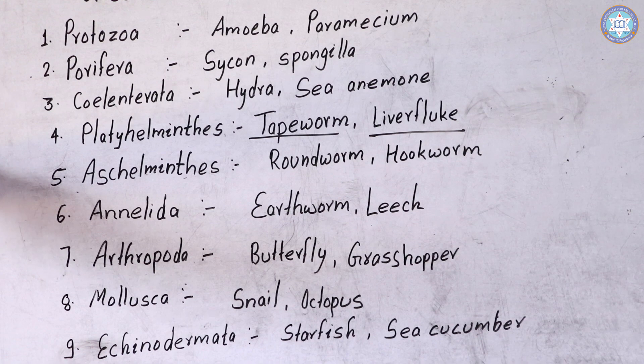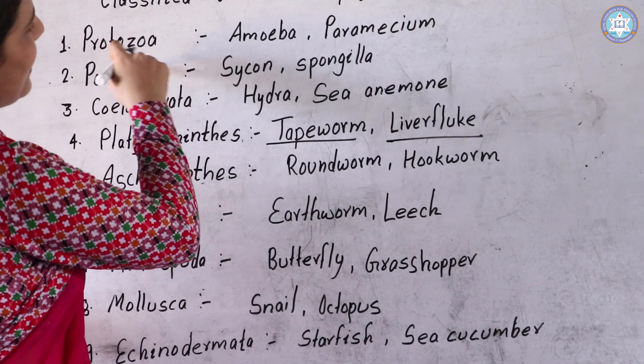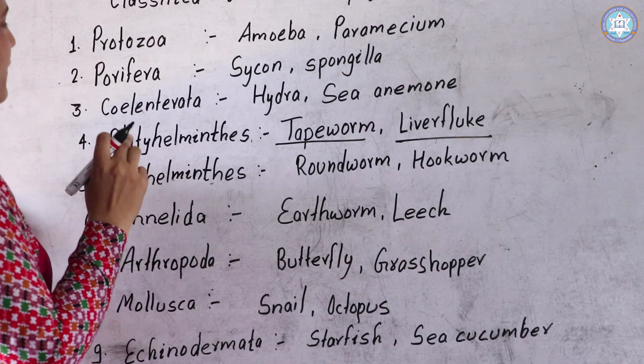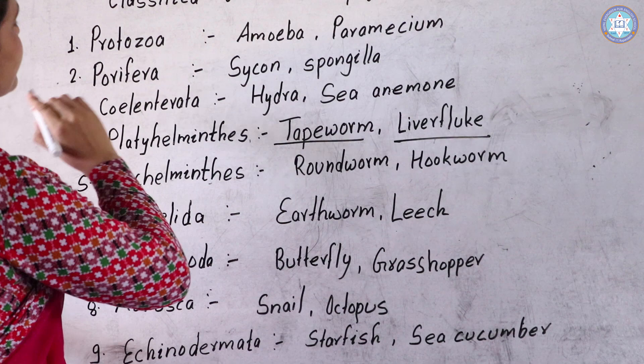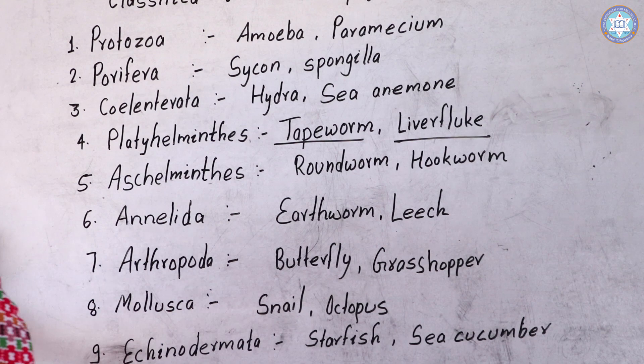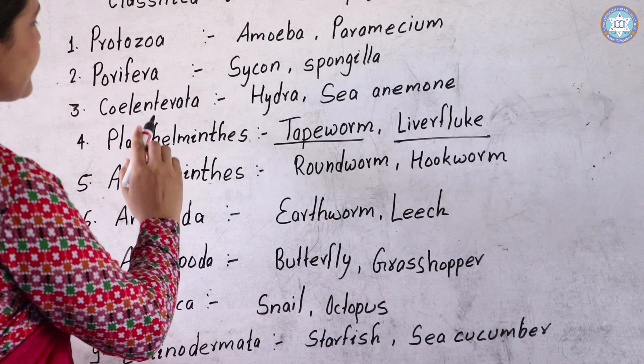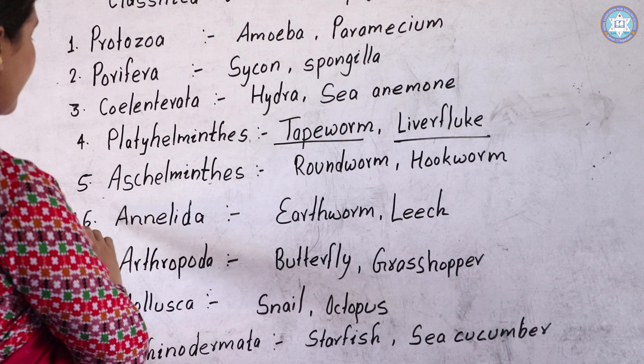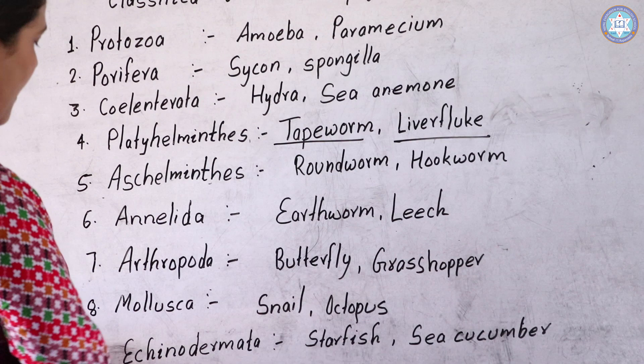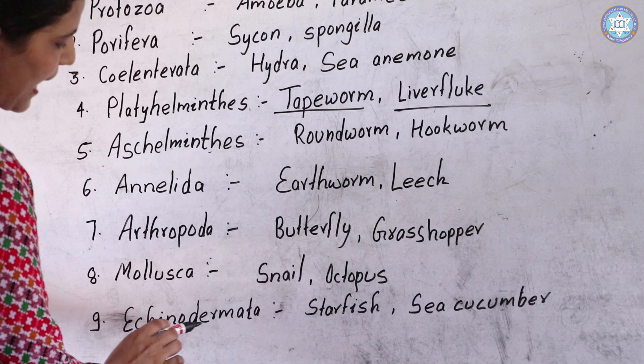The nine phyla are: first, Protozoa; second, Porifera; third, Cnidaria; fourth, Platyhelminthes; fifth, Aschelminthes; sixth, Annelida; seventh, Arthropoda; eighth, Mollusca; ninth, Echinodermata.